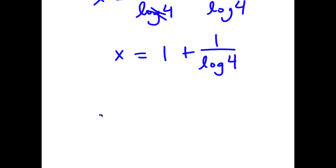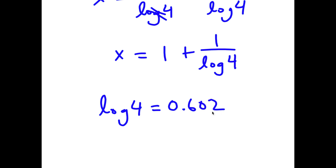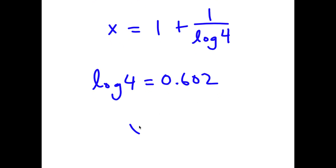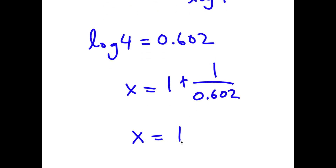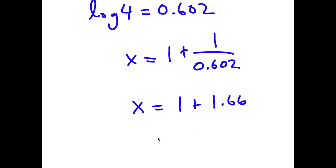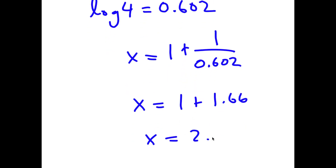Log 4 is equal to 0.602. So I get x is equal to 1 plus 1 over 0.602. And 1 divided by 0.602 is 1.66. So 1 plus 1.66 is 2.66.